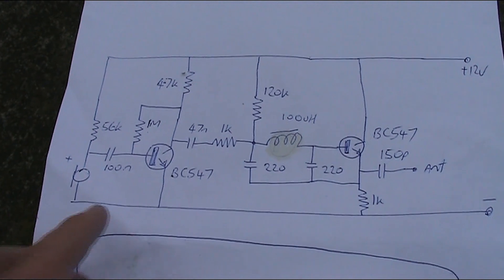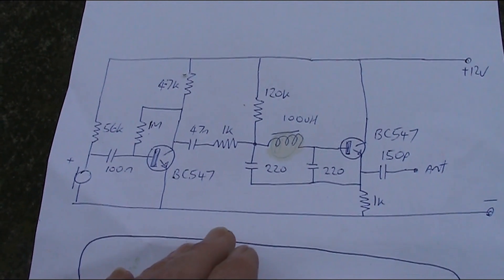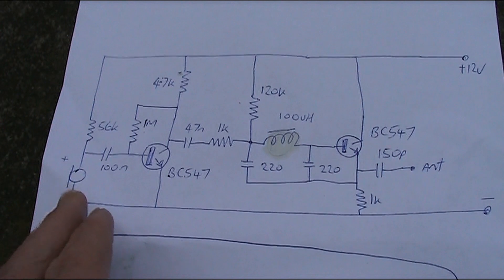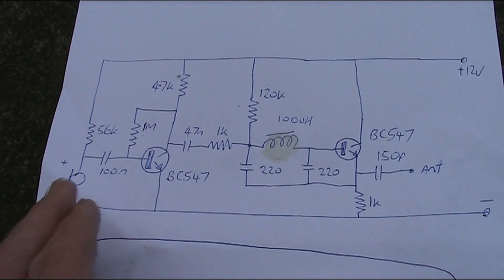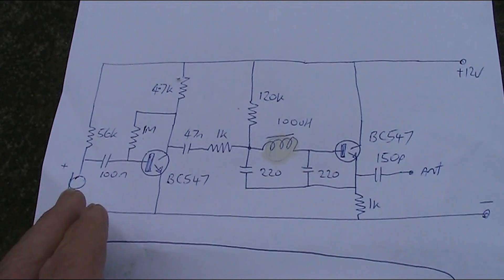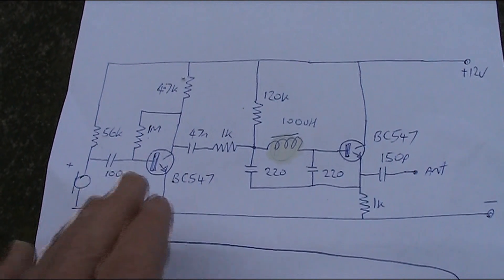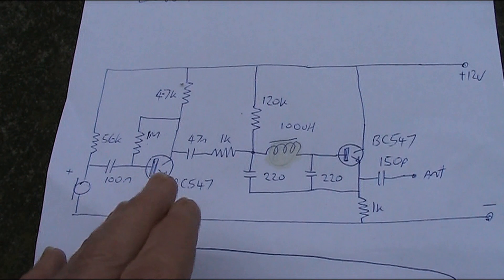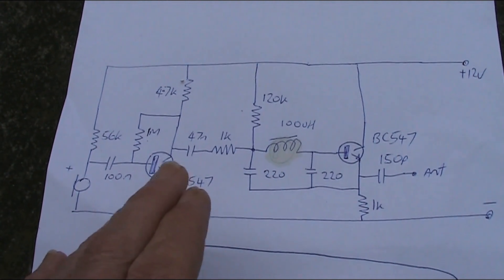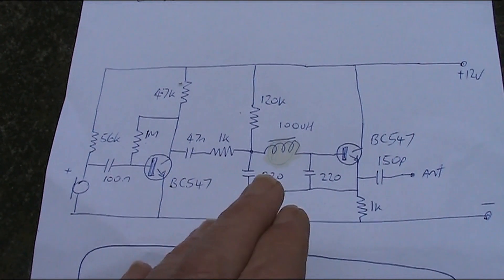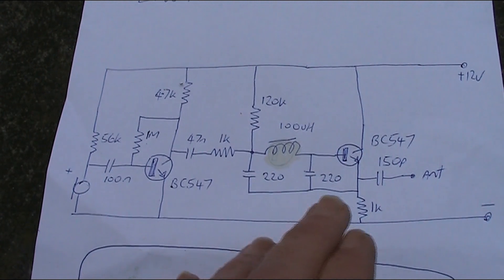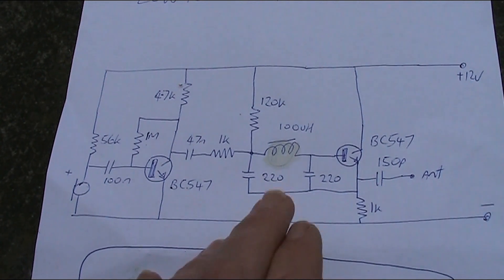The transmitter has just two stages. An audio amplifier, very common circuit, you'll see it in a lot of electronics. Just got the electric microphone, single transistor and the audio from the collector comes and modulates the one transistor RF oscillator.